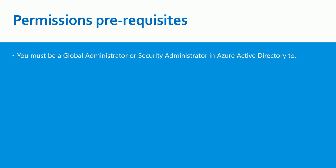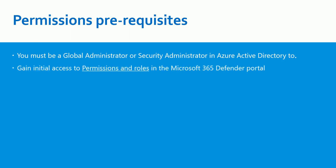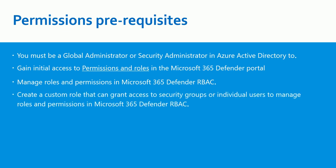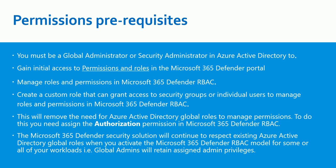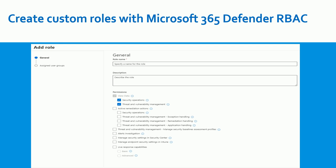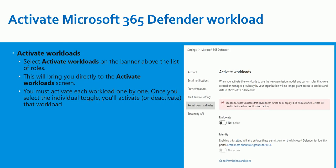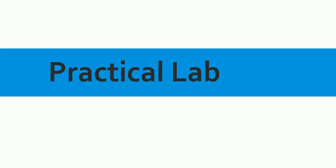The permissions required to configure RBAC: you must be a Global Admin or Security Admin in Azure Active Directory. You should be part of the Global Administrator or Security Administrator role to perform RBAC. This covers gaining access to permissions and roles in different portals, managing role permissions, and creating custom roles. You should have proper rights to perform RBAC actions.